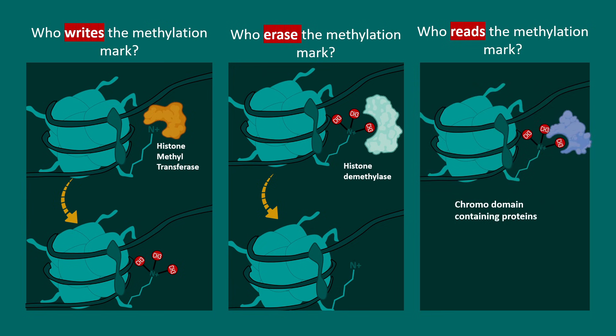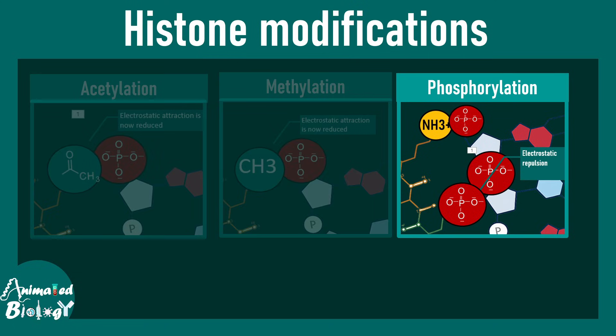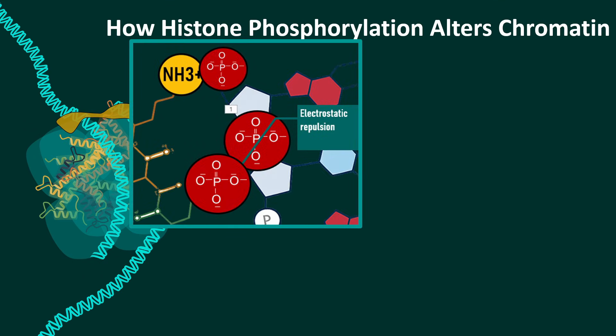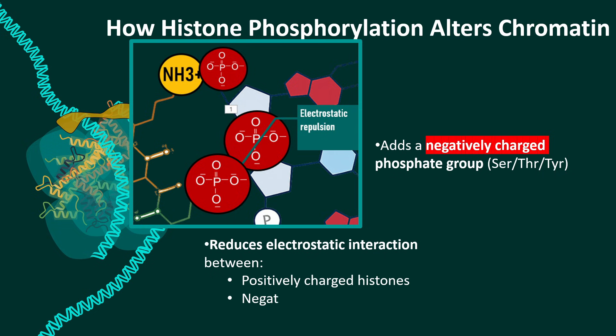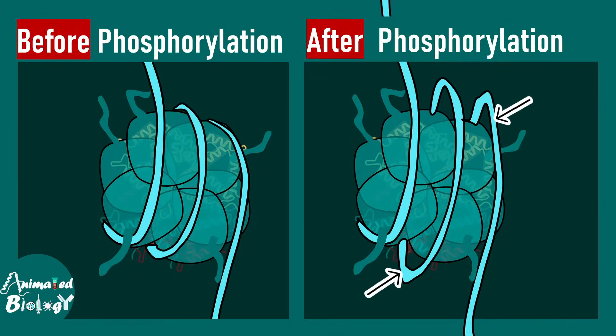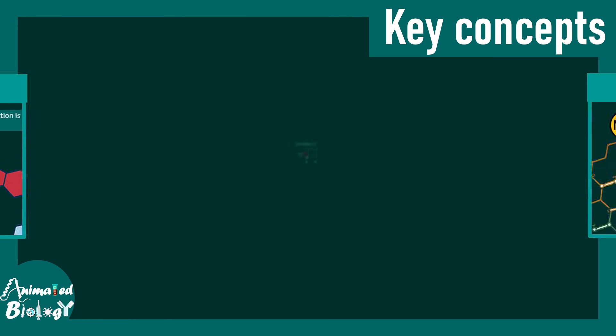Histone methyltransferases write the methyl mark, histone demethylases erase it, and proteins containing a chromodomain read it by recognizing methylated histones. Phosphorylation is another epigenetic modification that alters the electrostatic interaction between DNA and histone — it adds a negatively charged phosphate group to serine, threonine, or tyrosine residues. This reduces the electrostatic attraction between the phosphate group and the NH3+ group of the histone, eventually leading to an open chromatin state.